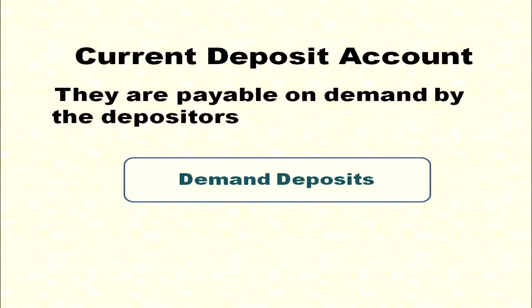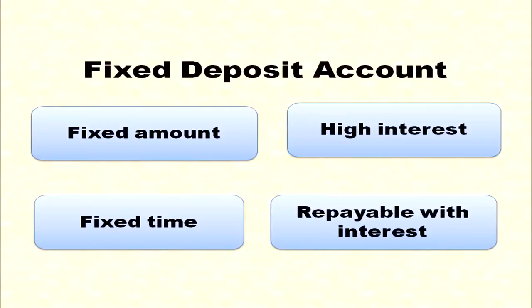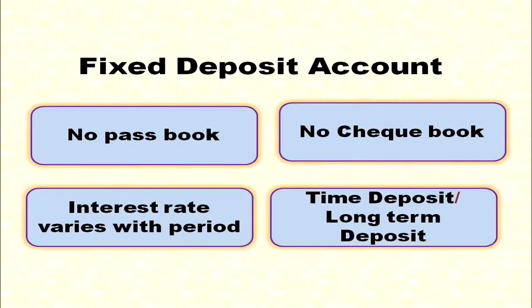Current deposit accounts are payable on demand by the depositor, so they are known as demand deposits. In a fixed deposit account, a fixed amount is deposited for a fixed time and earns a high rate of interest. The deposit is repayable with interest; no passbook or chequebook facility is issued. Interest varies with the period — the longer the deposit period, the higher the interest rate. It is also known as a time deposit or long-term deposit.